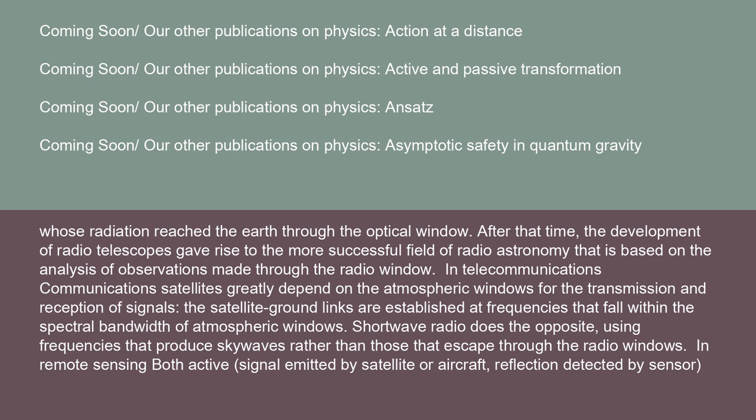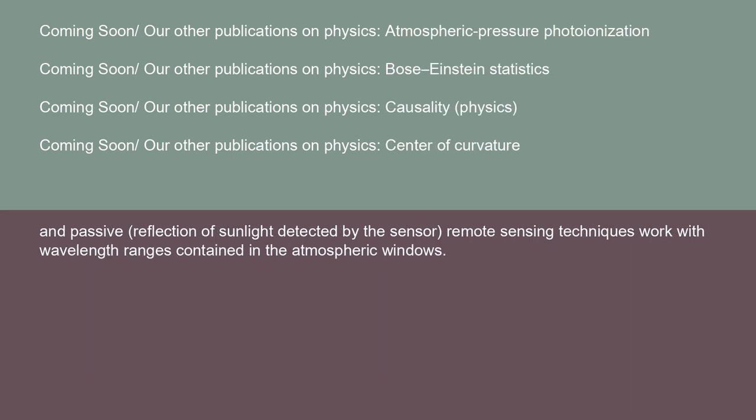In remote sensing, both active — signal emitted by satellite or aircraft, reflection detected by sensor — and passive — reflection of sunlight detected by the sensor — remote sensing techniques work with wavelength ranges as contained in the atmospheric windows.